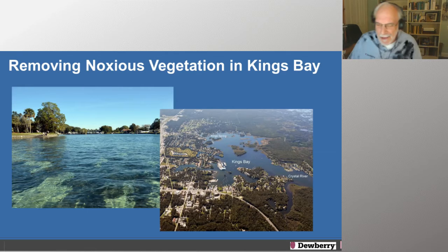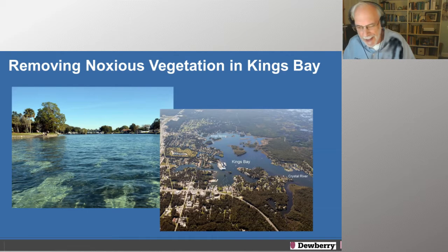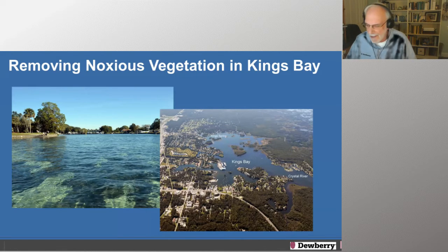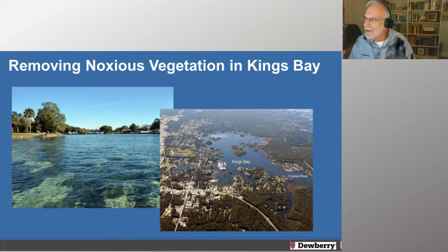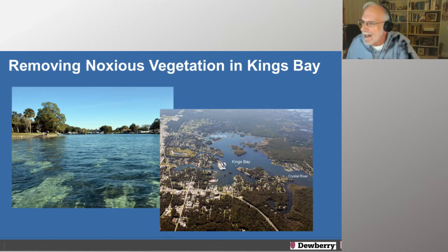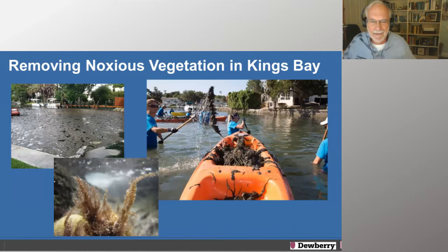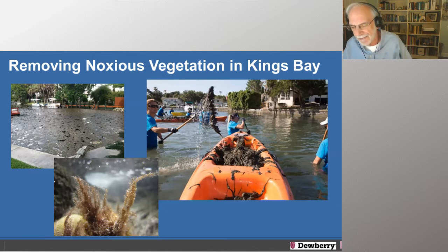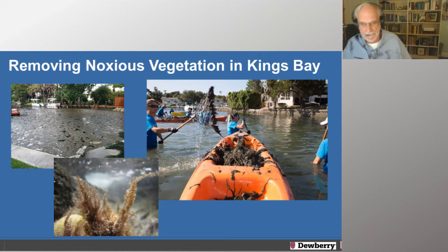I want to show some of my favorite topo-bathymetric data projects Dewberry did with us. This is my all-time favorite: removing noxious vegetation in Kings Bay, Florida. Kings Bay is up in Citrus County — it's the headwaters of the Crystal River, made by about 21 first-order springs. As the springs bubble up in the karst, they fill Kings Bay, and the overflow goes out into the ocean through the Crystal River. The water temperature in the bay fluctuates between about 70 and 75 degrees year-round.